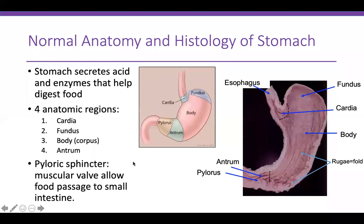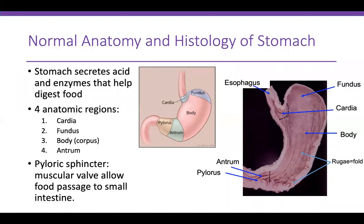Let's go over normal anatomy and histology of the stomach. The stomach lies in between the esophagus and duodenum. It receives a food bolus from the esophagus, and the stomach secretes acid and enzymes that help digest the food.